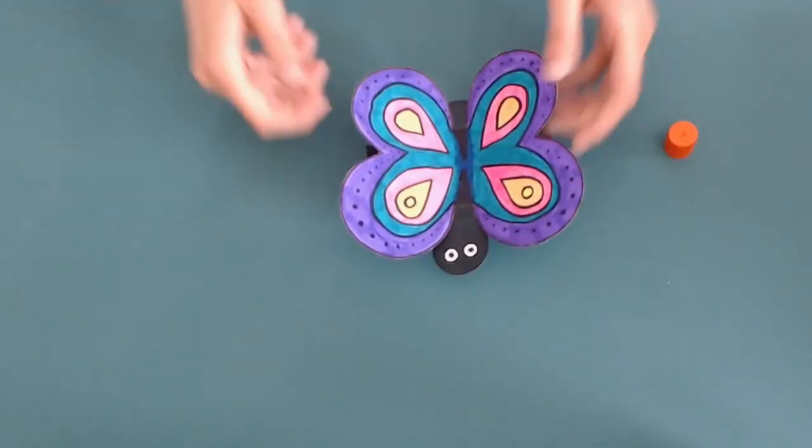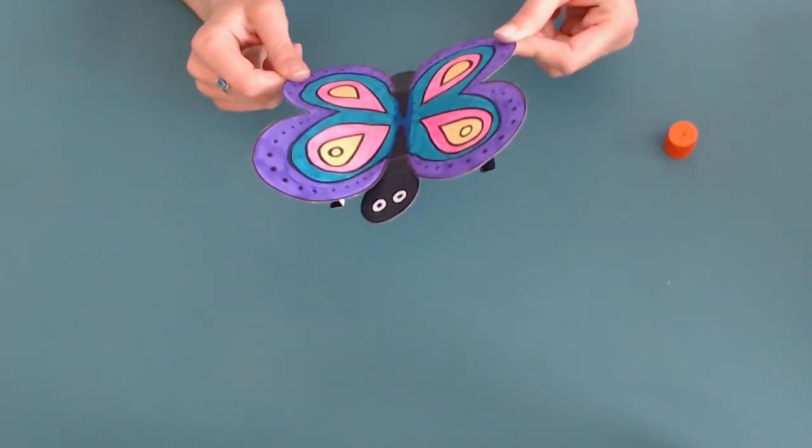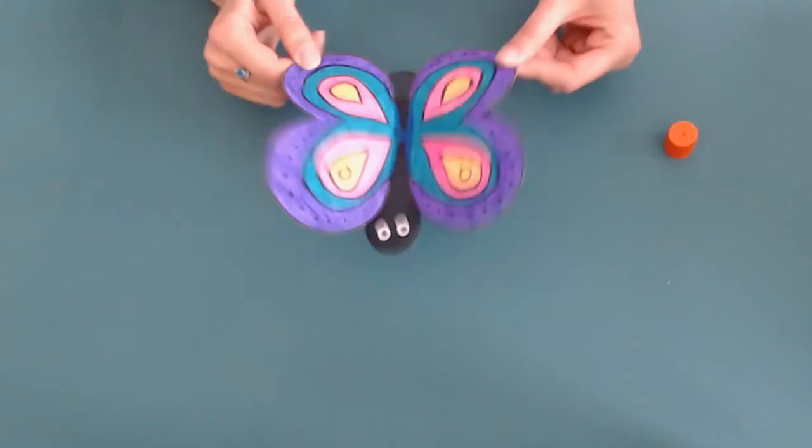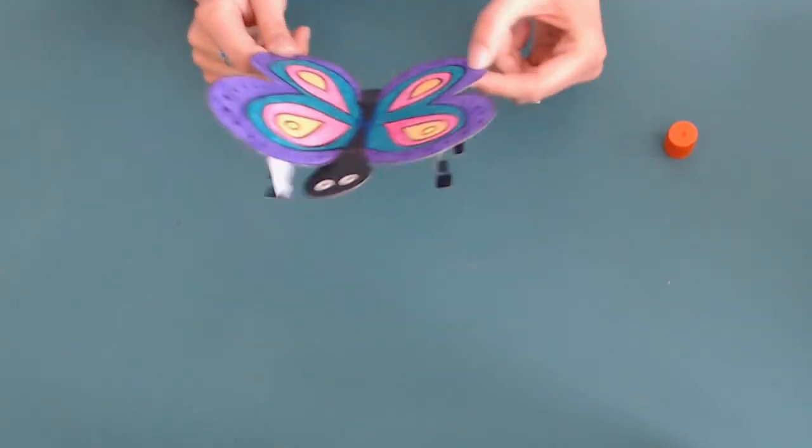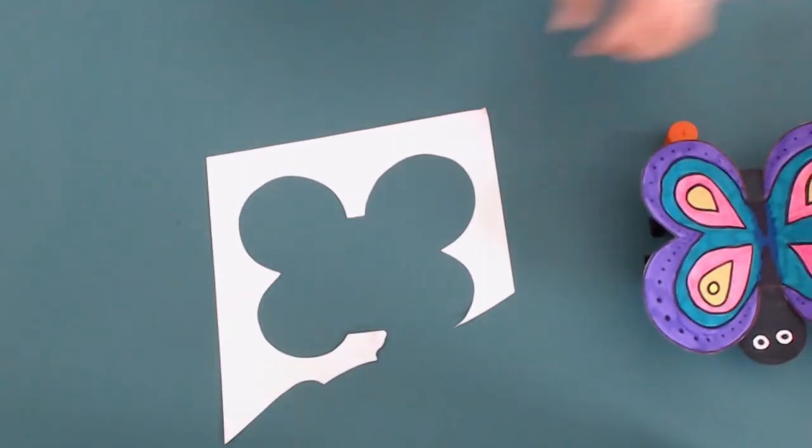And there you go, you kind of have the shape of the butterfly done here with legs and wings. We only have one more step that we need to do before our butterfly puppet is complete and that's to put the strap on to make it a puppet.